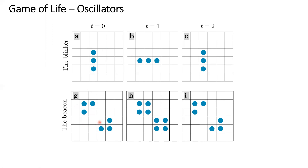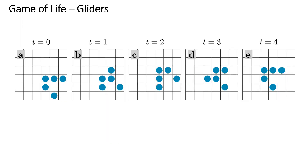Here is another one called the beacon. This cell here has three alive neighbors — it will become alive. And once they become alive, they have four alive neighbors, which means they're going to die in the next step. It will then go back to its original configuration.